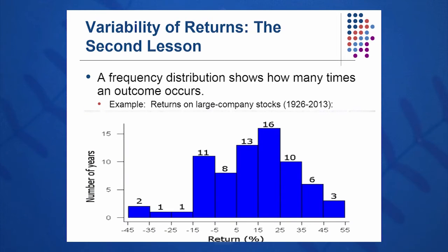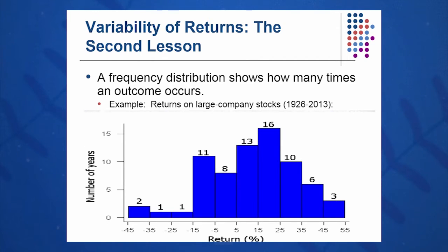You may have learned in stat class this is also called a histogram. I call it a bucket diagram — how many returns fit into each one of those buckets. From minus 15 to minus 5, we see 11 returns, and from minus 5 to 5 percent, we see 8 returns, and so on. Just throw the individual returns into these buckets, and you'll see almost a normal distribution start to take place.